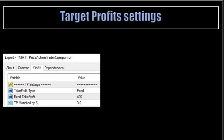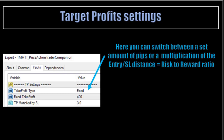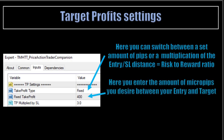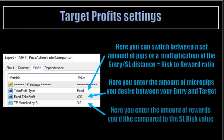Target profit settings. Take profit type: here you can switch between a set amount of pips or a multiplication of the entry-to-stop-loss distance, which equals a risk-to-reward ratio. Here you enter the amount of micropips you desire between your entry and target. Here you enter the amount of reward you'd like compared to the stop-loss risk value. In this example, 3 rewards to 1 risk to set your target.